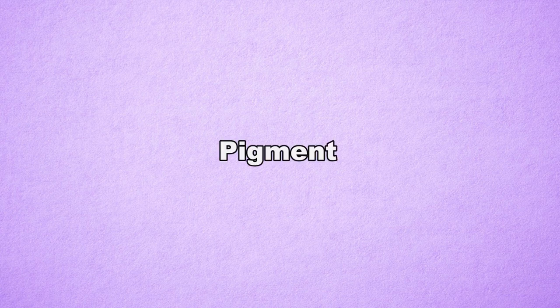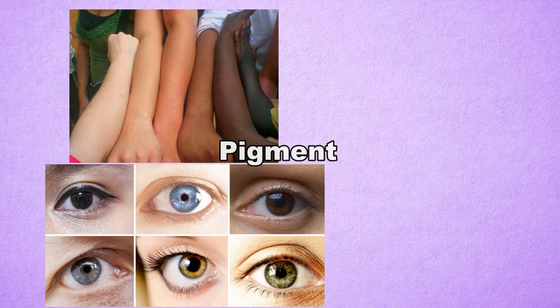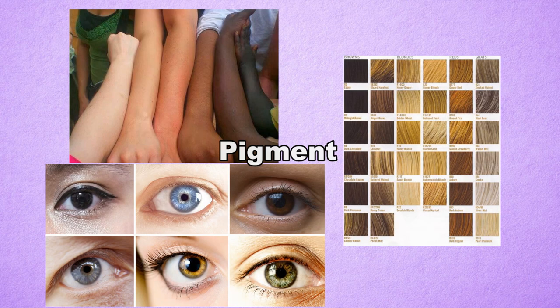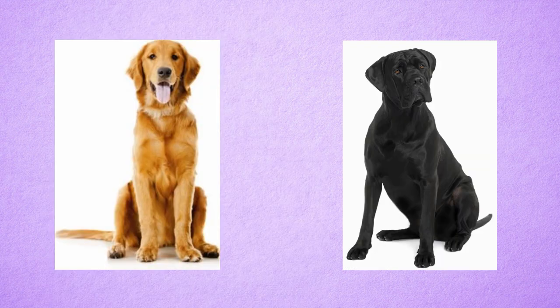We will start off this lesson by learning what the two different types of pigment are that create fur colors in dogs. Pigment is what gives skin, eyes, and hair their color. There are two pigments that create all colors in dogs. These are red and black.